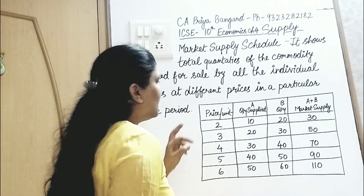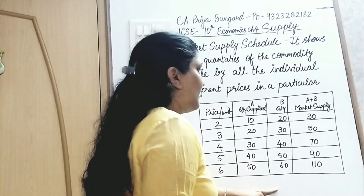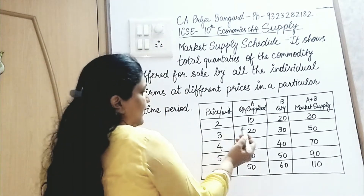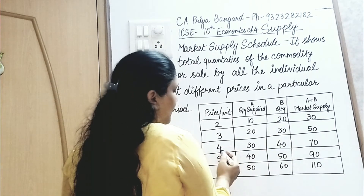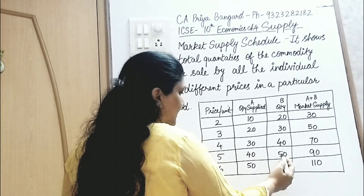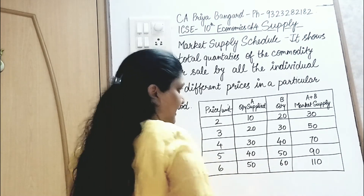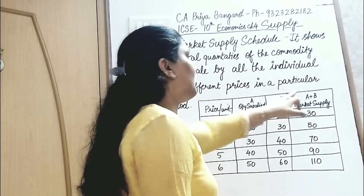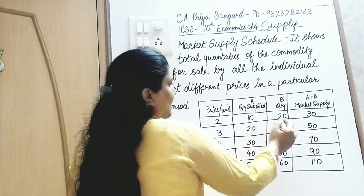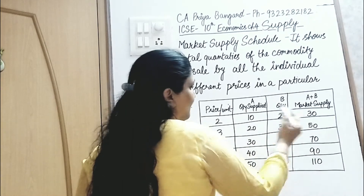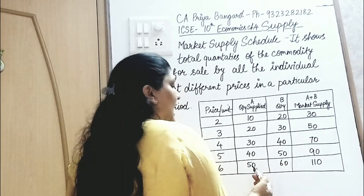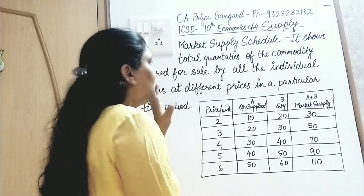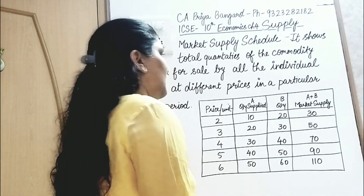What is market supply schedule? We had studied individual supply schedule, and now we look at market supply schedule. Market is the total of all the individual firms producing. Let's take an example where there are two producers only in the market, A and B. Market supply will be A plus B — the total of what A and B supply individually becomes market supply. You can use the word total or the word aggregate; aggregate also means total.